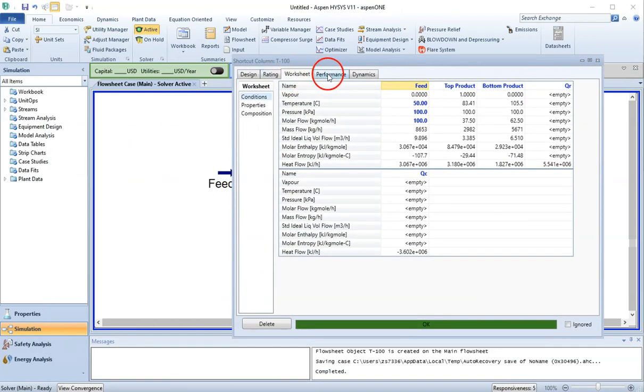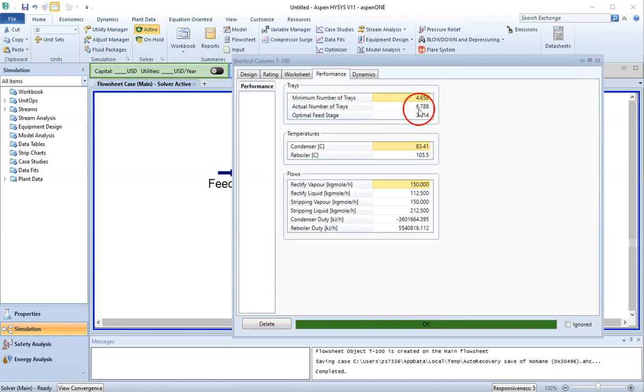I go to performance. These are the actual number of plates, which was 6.78, which is almost 7 plates. The feed is entering at 3.7, which is 4th. So the feed is entering at the 4th plate, and total number of plates required are 7. Whereas the minimum number of plates for this system needs to have been 4.65, which is almost 5. This is my condenser temperature, this is my reboiler pressure—sorry, this is my reboiler temperature and the condenser temperature. These are the rectifying vapors, stripping vapor and stripping liquid. We have the condenser duty releasing energy, that is why it is negative, and the reboiler duty requiring energy, which is why it is positive.